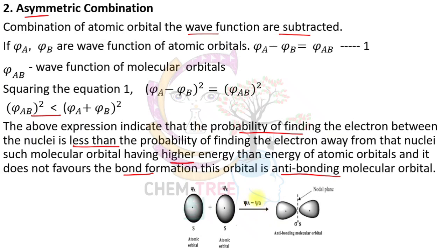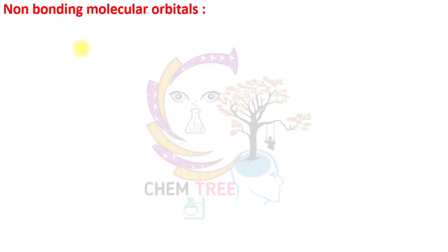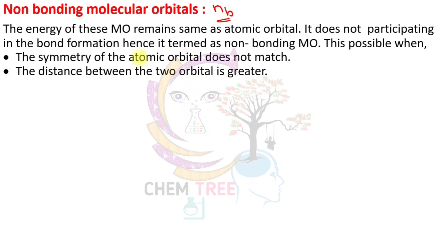Through subtraction of wave functions, an anti-bonding molecular orbital is formed. In the anti-bonding molecular orbital, the probability of finding the electron is zero at the node — a node is a region where the probability of finding the electron is zero. A non-bonding molecular orbital (NB) has the same energy as the atomic orbital and does not participate in bond formation.